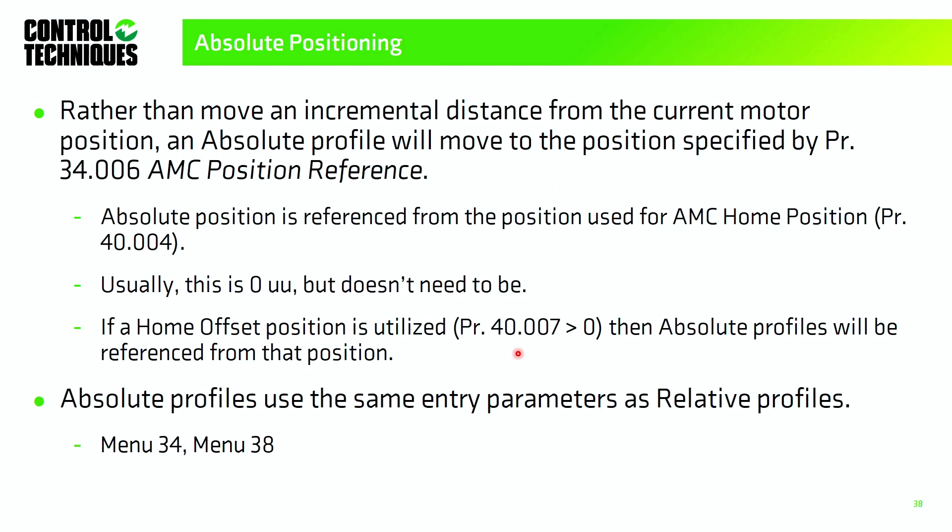The last motion mode is absolute positioning. Rather than moving incrementally from the current position, an absolute profile moves to the position specified by menu 34 parameter 6 (AMC position reference). Absolute position is referenced from the home position. If a home offset is used (menu 40 parameter 7 > 0), absolute profiles reference from that physical position. Absolute profiles use the same parameters as relative profiles — speed and accel/decel in menu 38, position in menu 34.